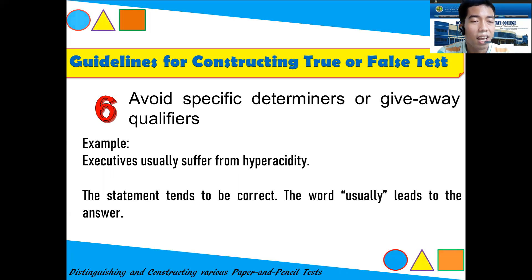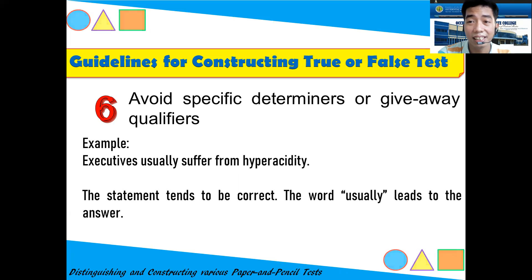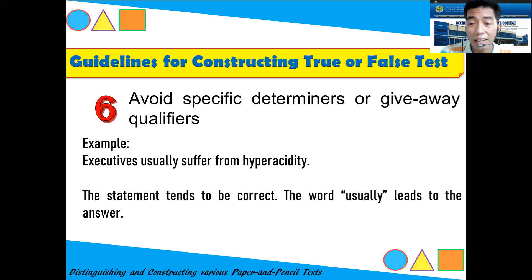Guideline six: Avoid specific determiners or give-away qualifiers. For example: 'Executives usually suffer from hyperacidity.' The statement tends to be correct because the qualifier 'usually' softens the claim — unlike 'always,' which almost always leads to a false answer. Avoid using such qualifiers that give away the answer.